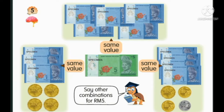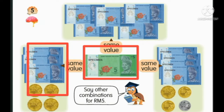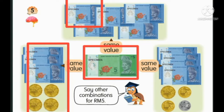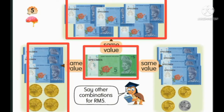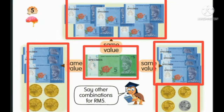Now we look at the combination for 5 ringgit. Here we have 1, 2, 3, 4 ringgit and 5 ringgit. Here we have 1 ringgit, 2 ringgit, 3 ringgit, 4 ringgit, then we have a combination of 1 ringgit. So altogether is 5 ringgit.